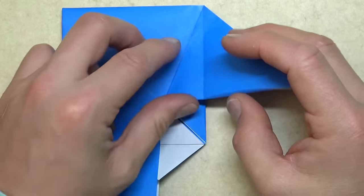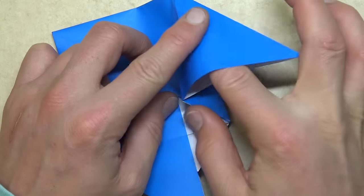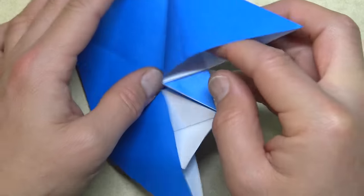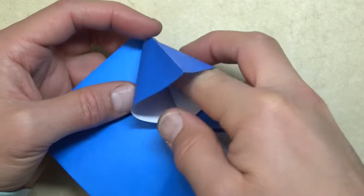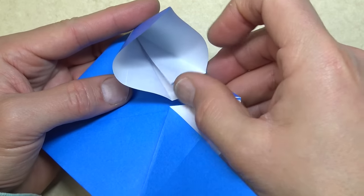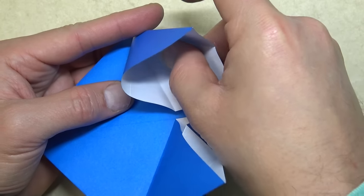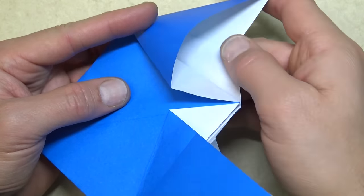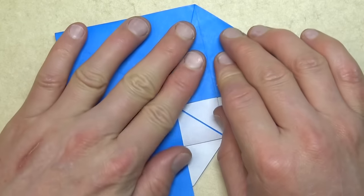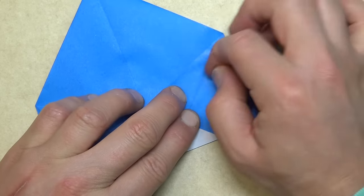And repeat on this side. So, open it like you're going to squash it. But then just take this flap and turn the page. And bring it back like it was.